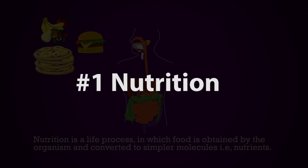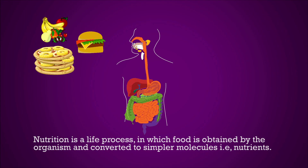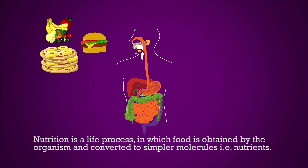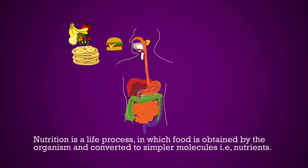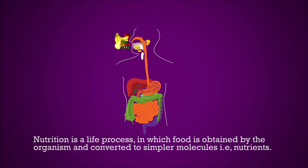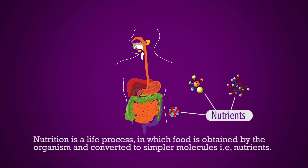The first life process is Nutrition. It is the life process by which organisms are able to obtain their food and can convert that food into nutrients. These nutrients help the organisms in their growth, repair, and maintenance of their bodies.